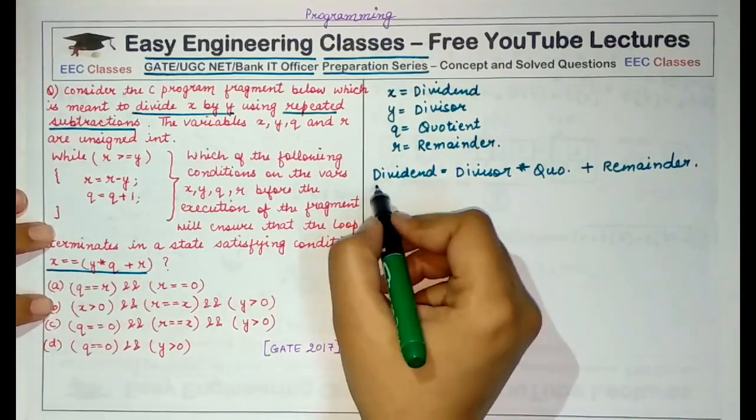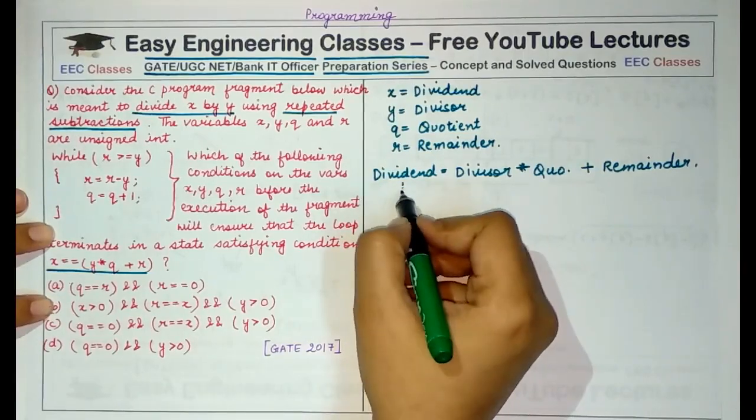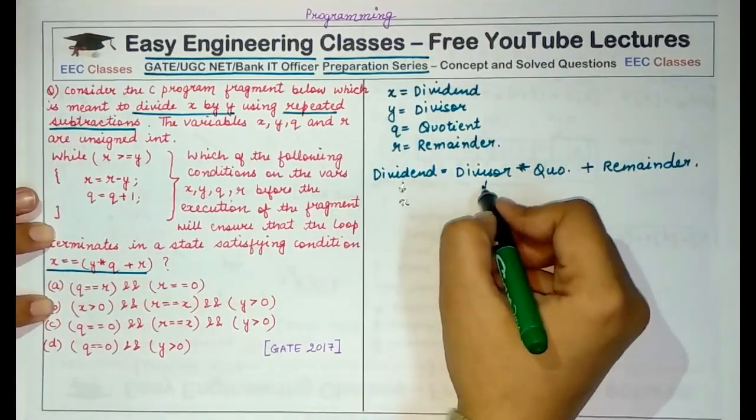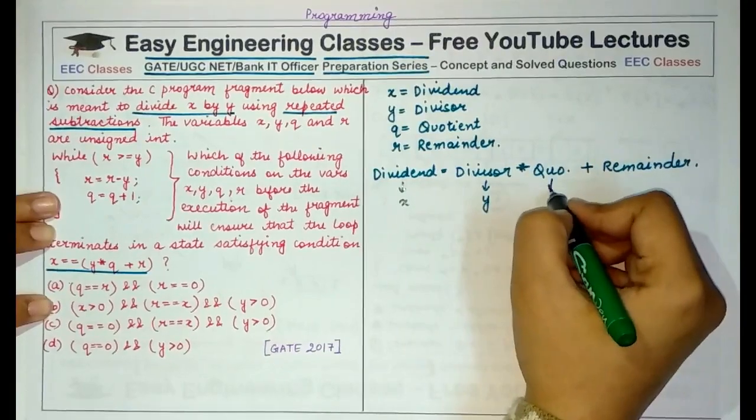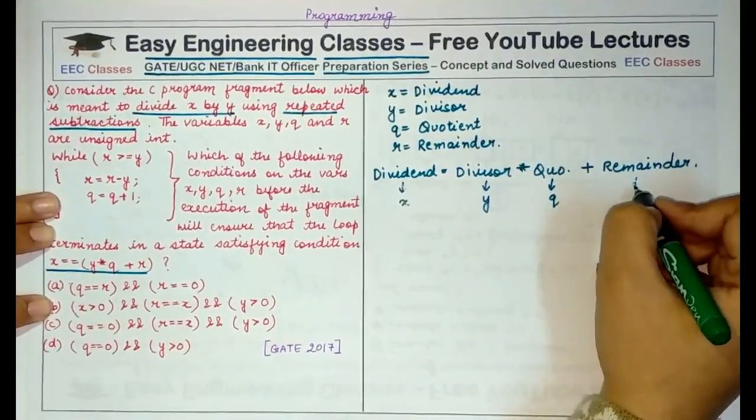So you have a particular value, the dividend which is X here, the divisor which is Y here, quotient is Q and remainder is R.